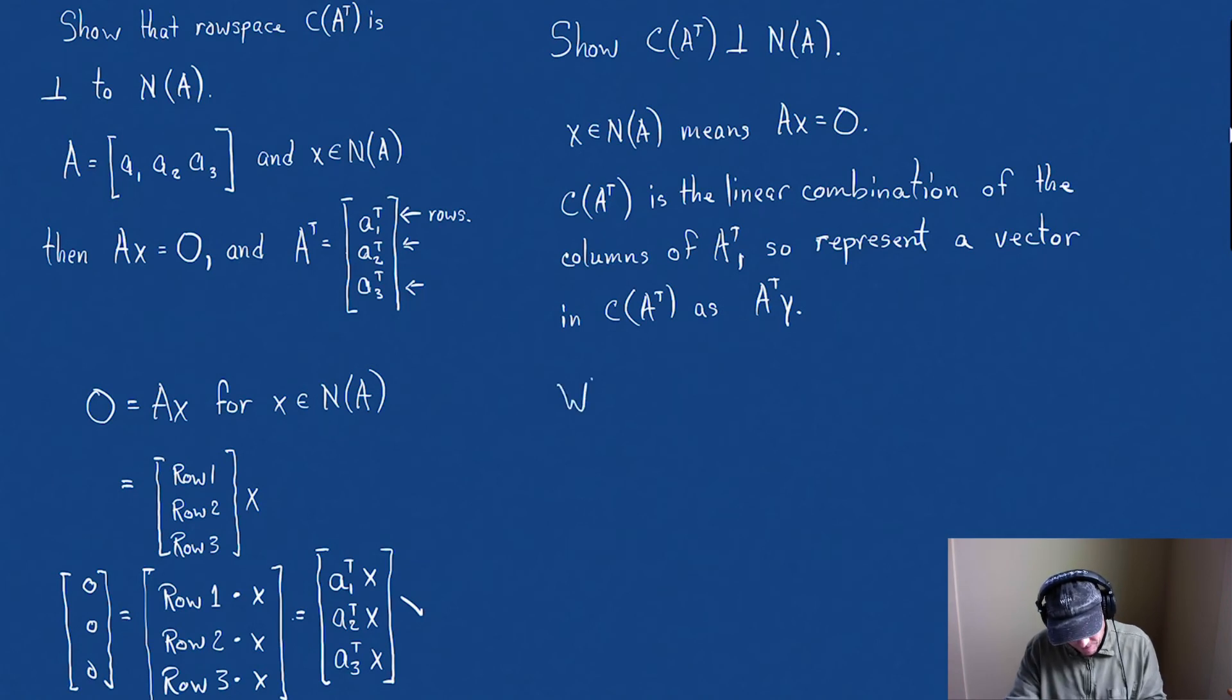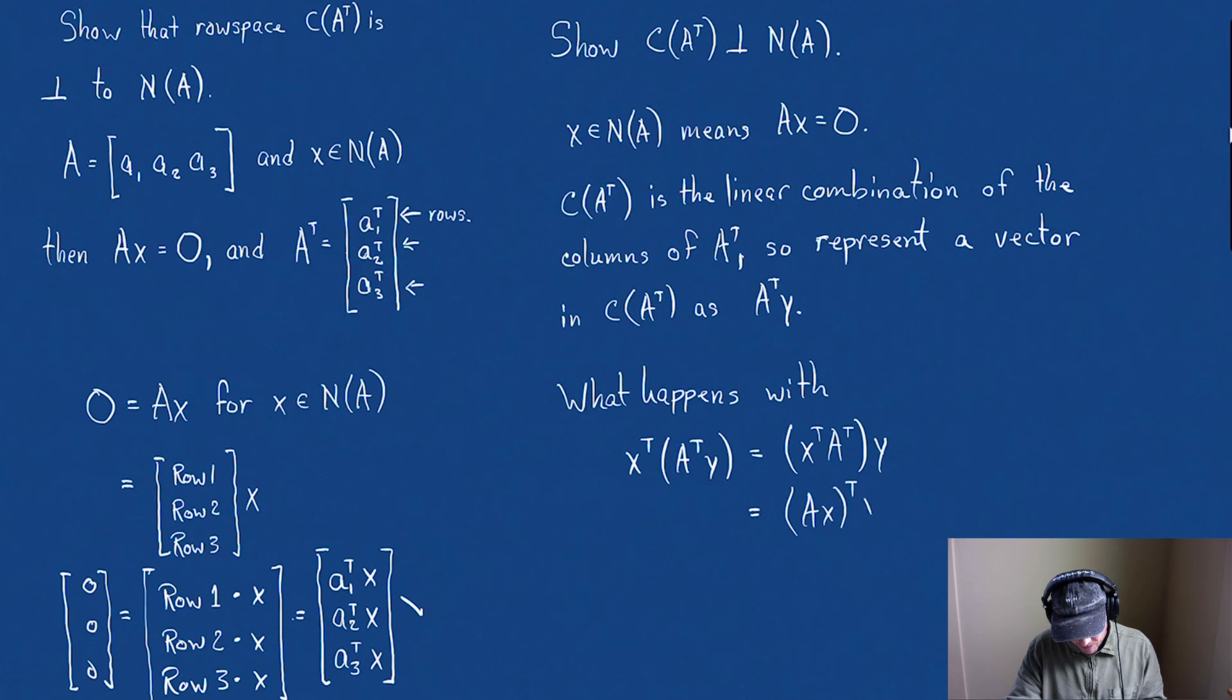So the question is, what happens with x transpose, so that's just something in the null space, times something in the row space? Well, let's remember that matrix multiplication or vector multiplication is associative. So this is x transpose A transpose times y. And what is that? Oh, look at that. That we can rewrite as Ax transpose y.